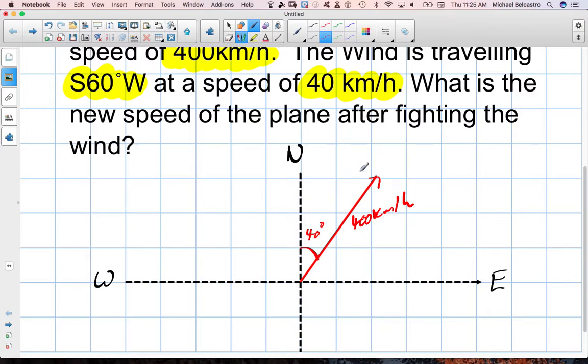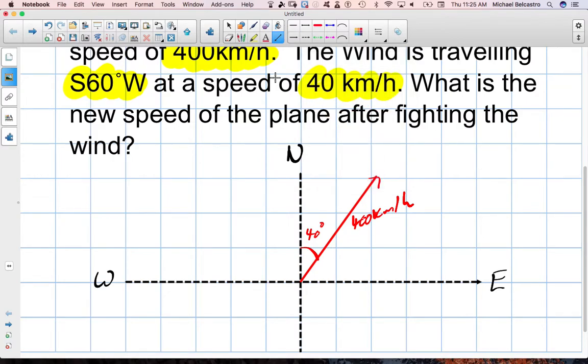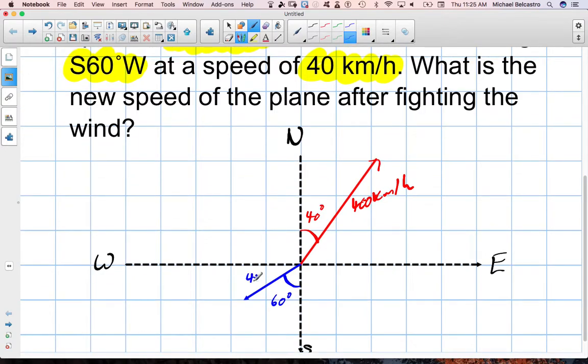Our wind is pretty much doing the opposite. We'll put the wind in blue. It is traveling south, originally south. It says south, and then 60 degrees to the west. So, that's heading this way, and the angle from it due south is 60 degrees. Its magnitude is far less. It's only 40.